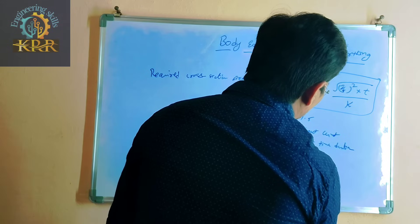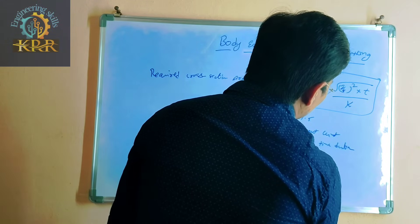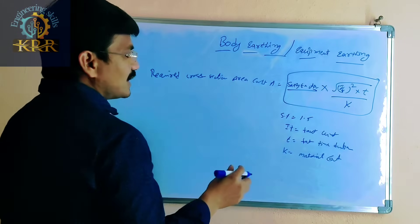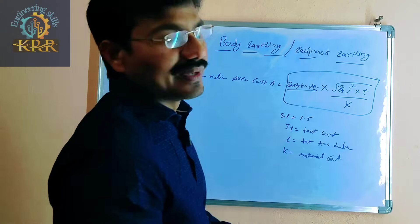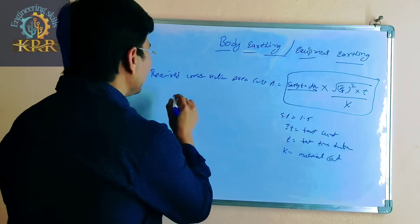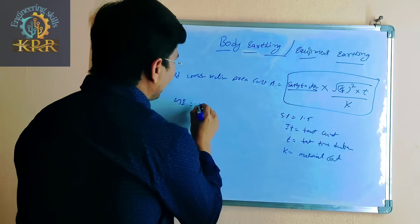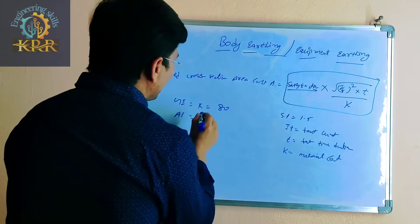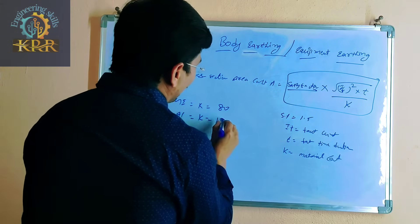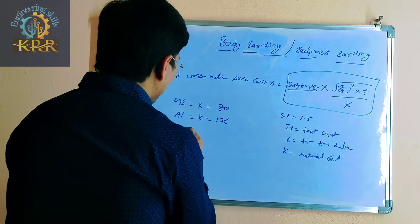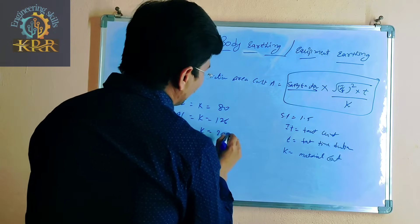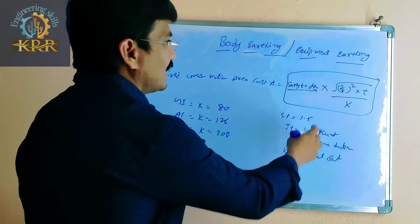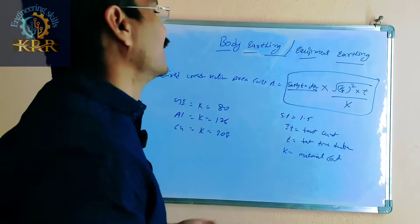K is called the material constant. The material constant is different for different materials. If you are using a GI strip, the material constant is 80. If you are using an aluminum strip, the material constant is 126. If you are using copper, the material constant is 208. Whichever material you are using, use the corresponding K value in the formula.